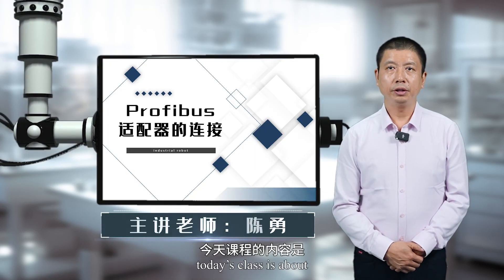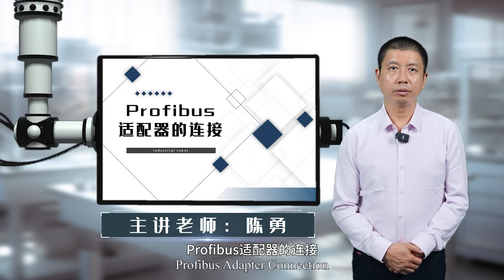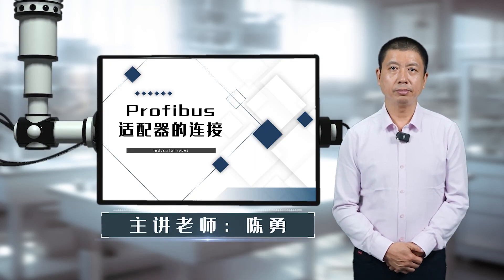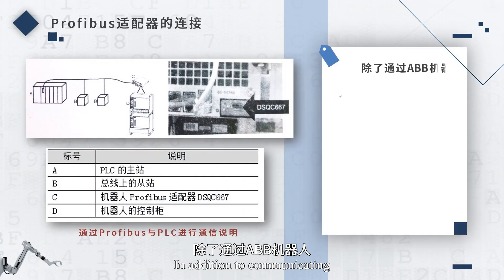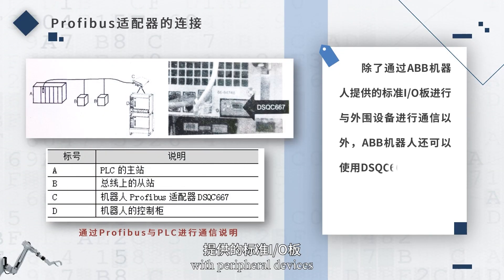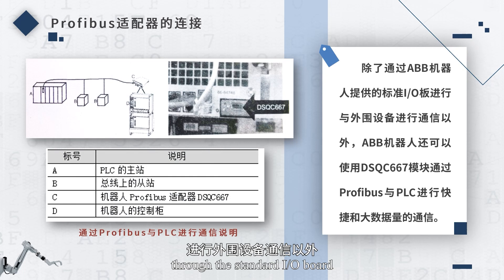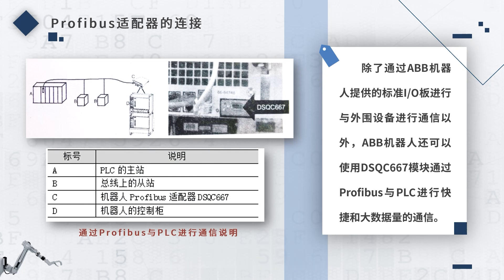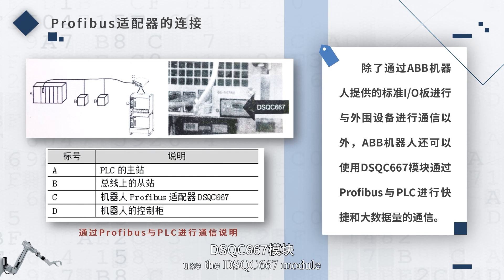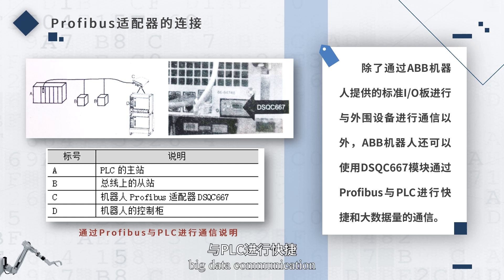Hi everyone, today's class is about PROFIBUS adapter connection. In addition to communicating with peripheral devices through the standard I/O board, ABB robots can also use the DSQC667 module to conduct bit data communication via PROFIBUS and PLC.